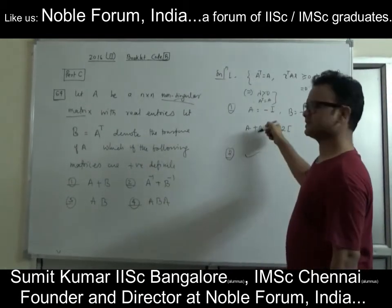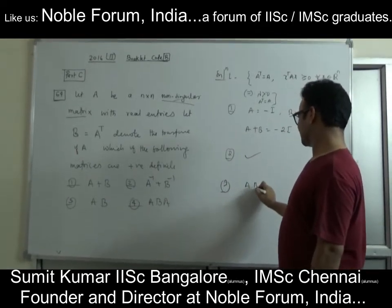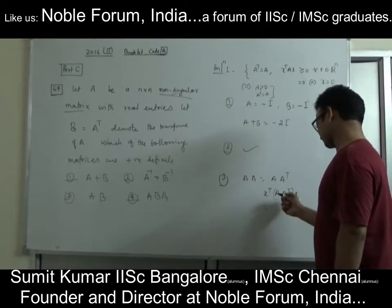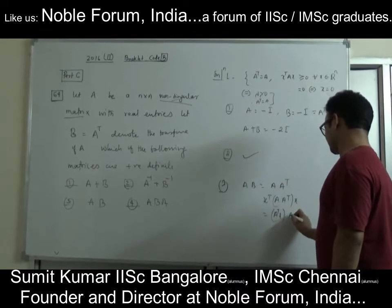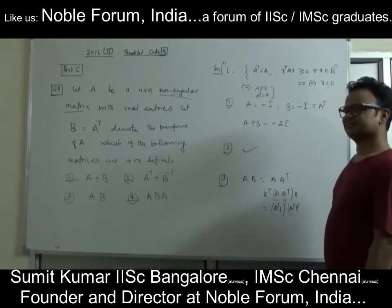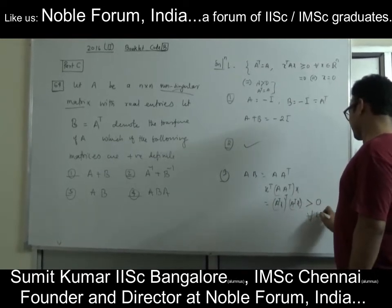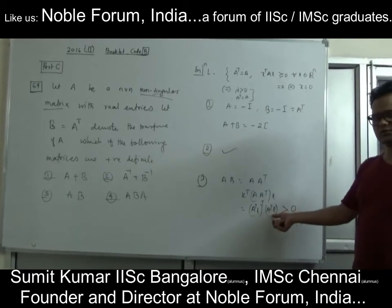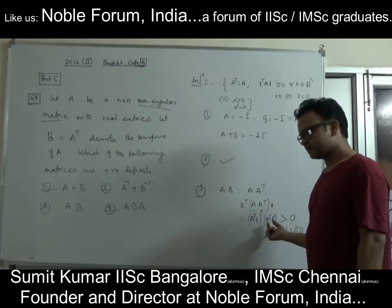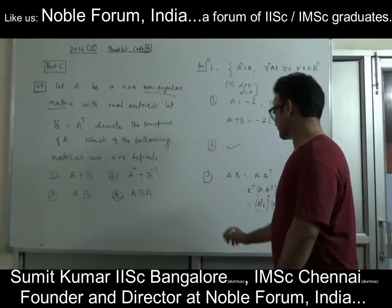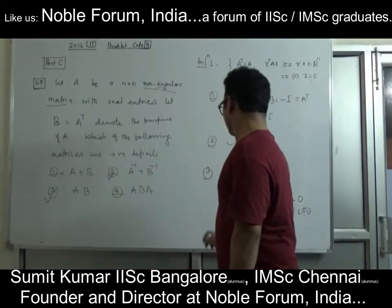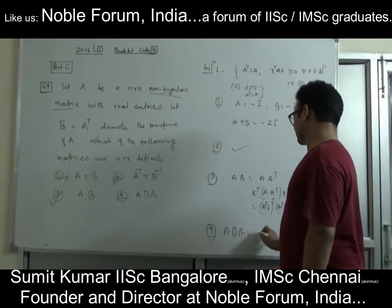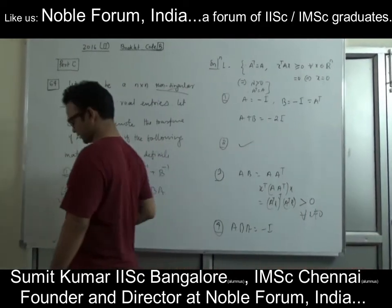Option 2, A⁻¹+B⁻¹: the same counterexample A = −I works, so this is also false. Option 3, AB = A·A^T: check x^T·(A·A^T)·x = (A^T·x)^T·(A^T·x) = ‖A^T·x‖² ≥ 0. Since A is invertible, A^T·x ≠ 0 for x ≠ 0, so this is strictly positive — AB is positive definite. True. Option 4, ABA: applying a similar argument, this turns out to be false. So only the third option, AB = A·A^T, is positive definite.